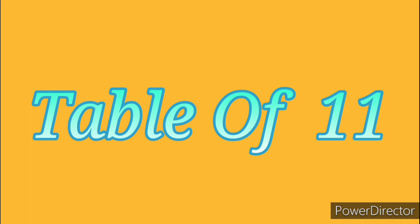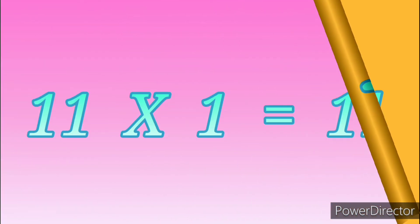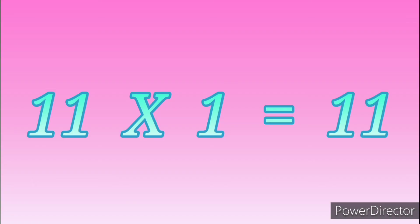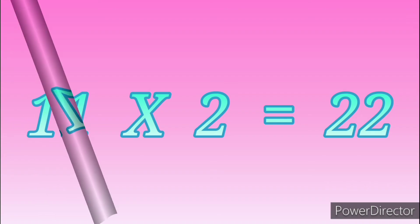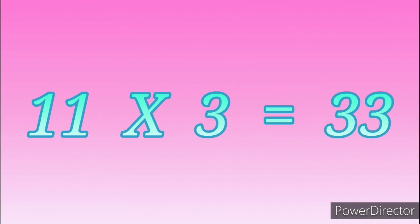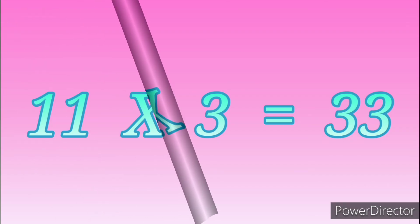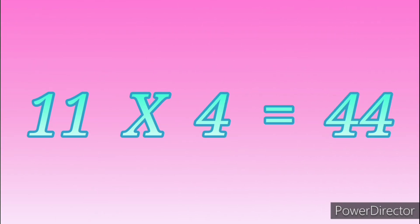Table of Eleven. Eleven ones are eleven. Eleven twos are twenty-two. Eleven threes are thirty-three. Eleven fours are forty-four.